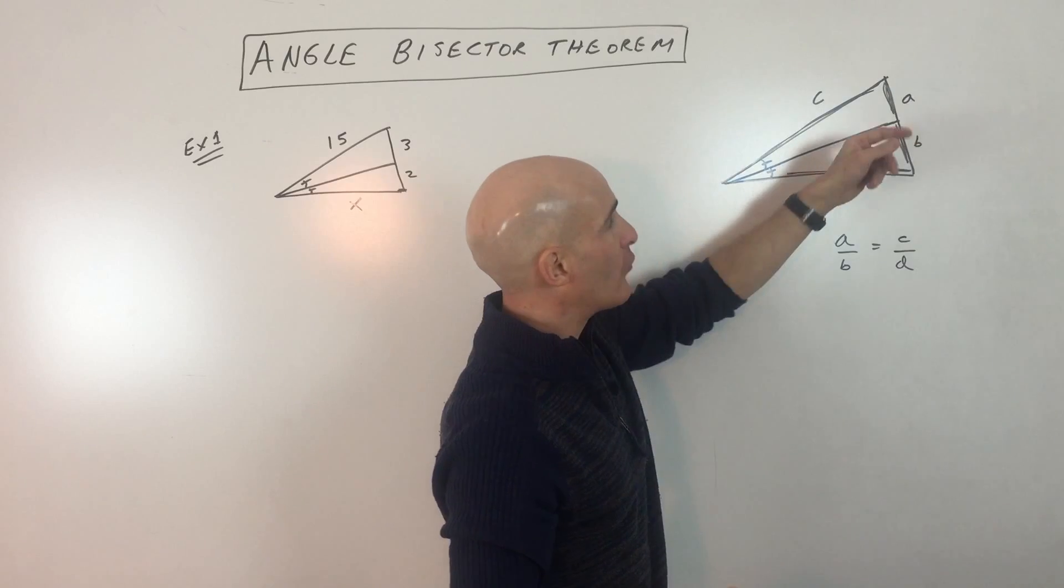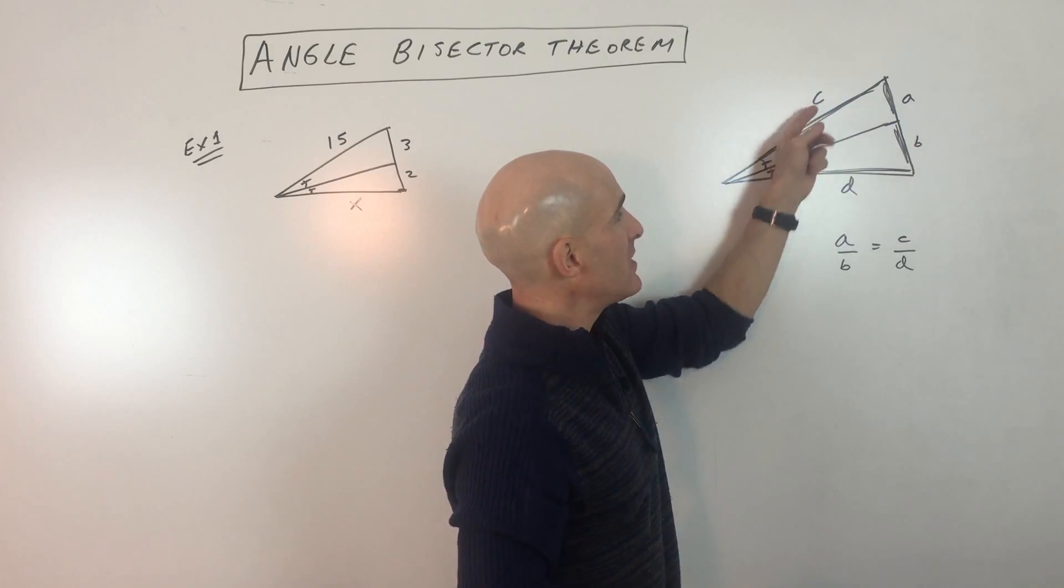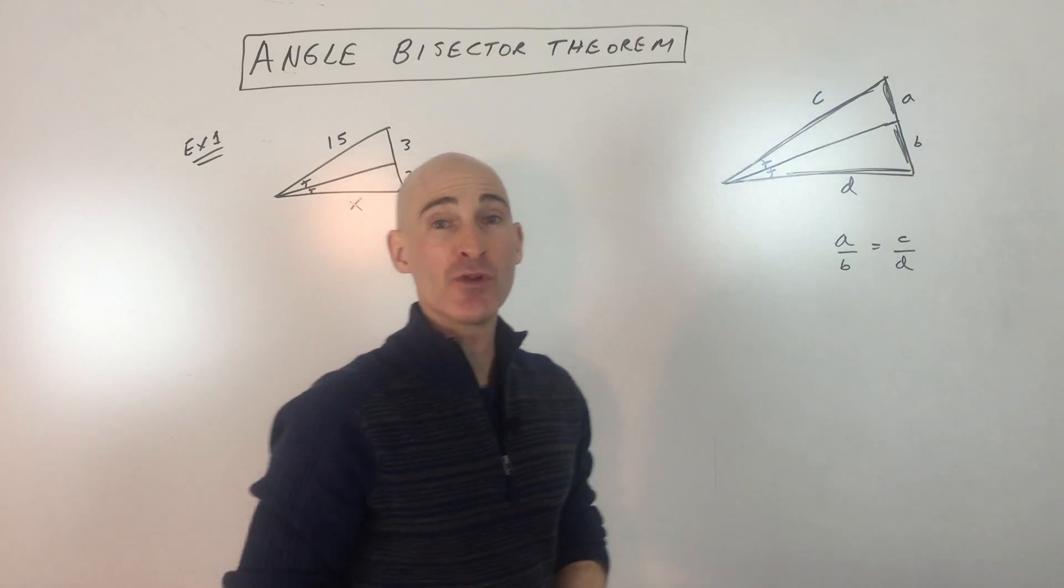It's almost like folding this triangle over. You can say A matches up with B, C matches up with D. So very simple. Let's go through an example.